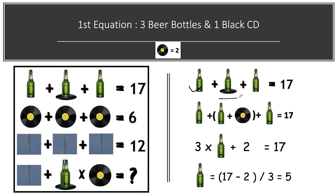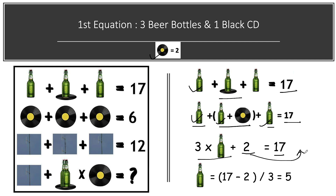Now revisiting the first equation: three beer bottles plus one CD equals seventy. You can see a CD is at the bottom of the beer bottle. So we have three beer bottles plus the CD value of two equaling seventy. That gives us three beer bottles equal to sixty-eight — wait, seventy minus two equals sixty-eight. Dividing by three, the beer bottle value is fifteen divided by three, which is five.